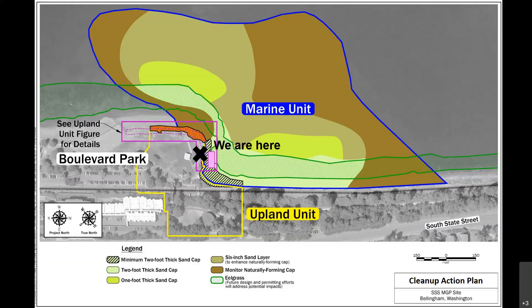A little closer in toward shore, we will use enhanced natural recovery where we will place clean sand, or whatever size material is determined appropriate, on top of the naturally recovering sediment in order to enhance the rate of natural recovery. Closer in near shore, we will use either an amended or conventional sand cap, depending on the contaminant concentrations present at a specific location. There are various types of amendments that can be used with sand caps, and the most effective amendment type will be evaluated and selected during engineering design of the cleanup.